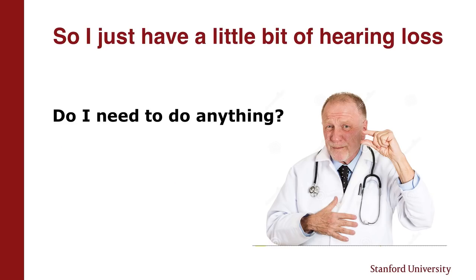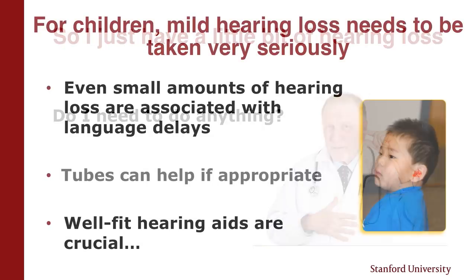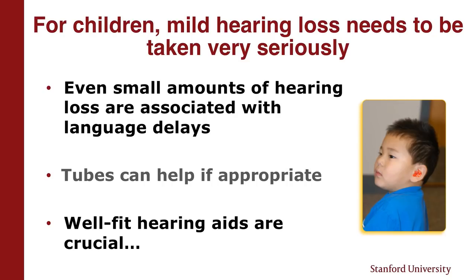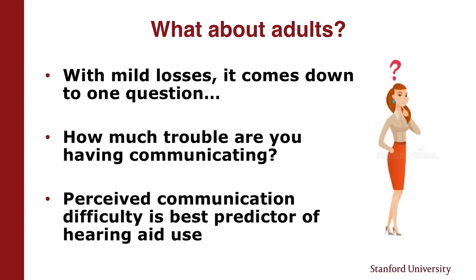What if I have a little bit of hearing loss — do I have to do anything? First, any child with even a small amount of hearing loss, even borderline normal hearing, you have to take very seriously. Kids don't have those representations of speech developed in their brain yet — they have to learn to develop them, and the only way they develop that is by good hearing. Levels of hearing loss that are fine for adults are problematic for kids, and making sure hearing aids are well fit is absolutely crucial in this population. For adults with very mild losses, honestly, the biggest predictor is how much trouble you're having. Perceived communication difficulty is the best predictor of who needs help.